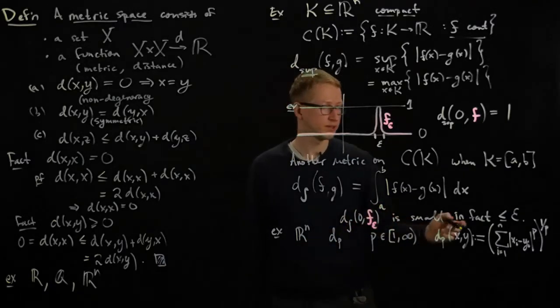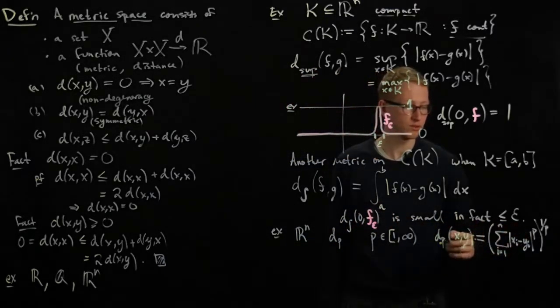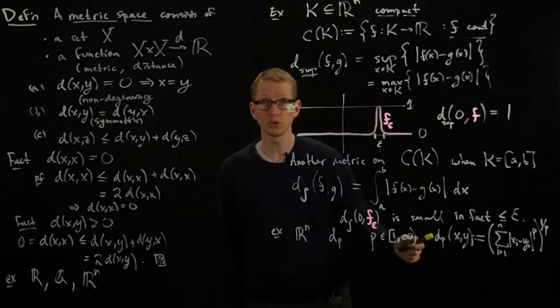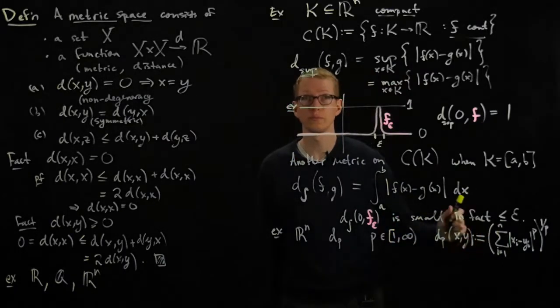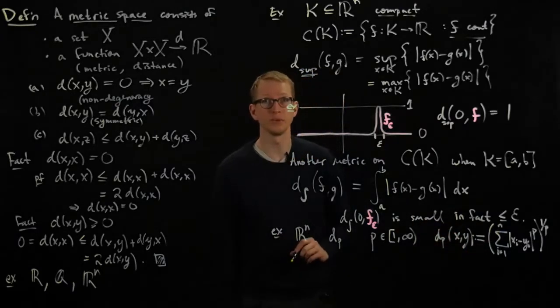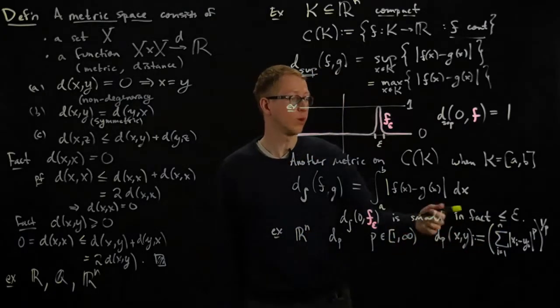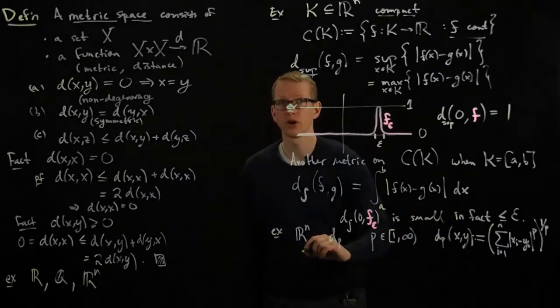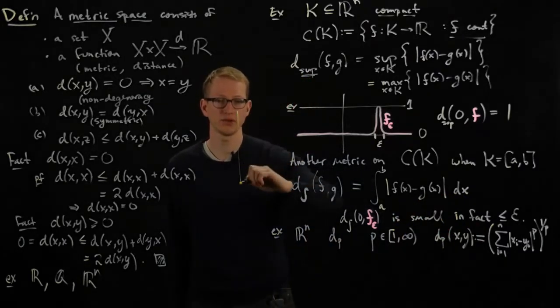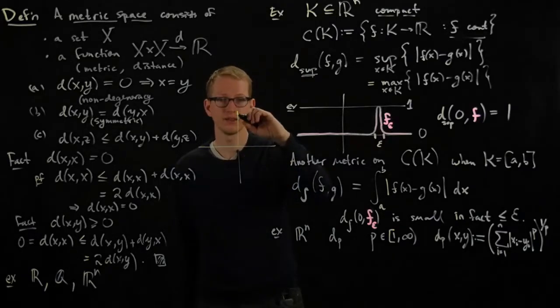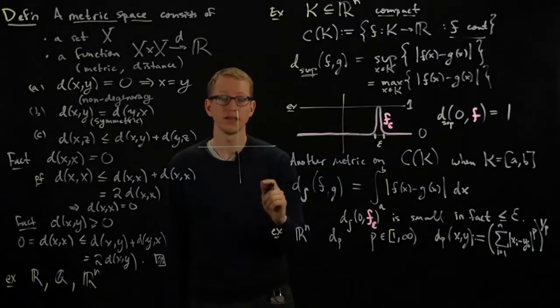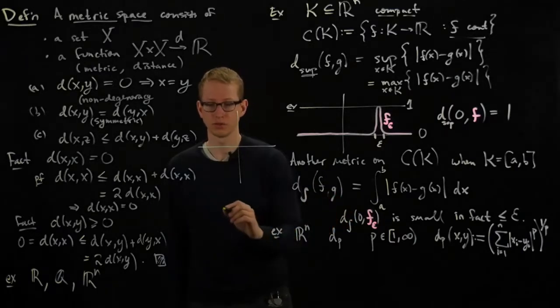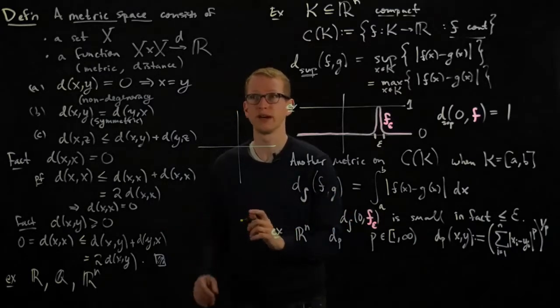But we should notice in some special cases this reduces to things that we might be familiar with. For instance, if p equals 2, this is just the usual metric on R^n that we've been describing. When p equals 1, what does this look like? We can get a great idea of what this metric is doing by looking at the unit sphere in R^n with respect to these metrics.